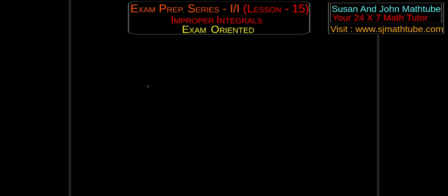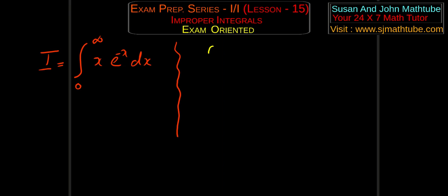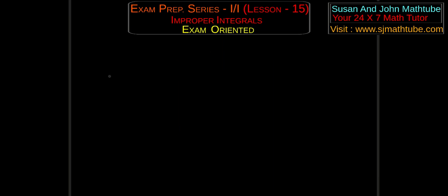Now let's go for a little bit more difficult question: evaluate the improper integral from 0 to infinity of x·e^(−x) dx. The first thing to do is write the given integral without limits. It's clear that we need to apply integration by parts. But I am going to give you a shortcut — it's an awesome shortcut called Bernoulli's rule.